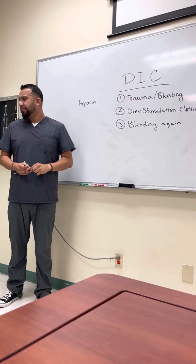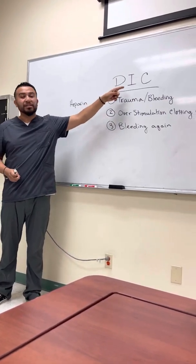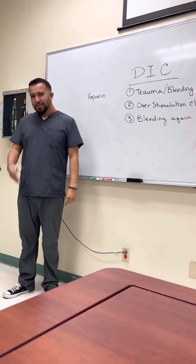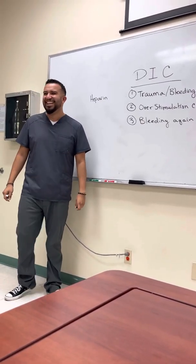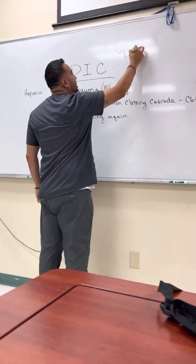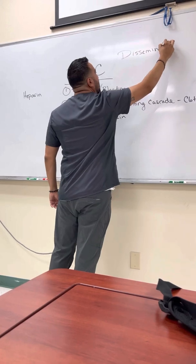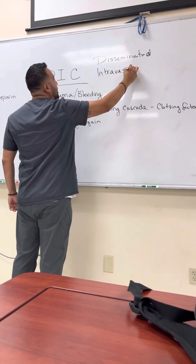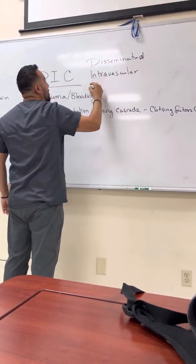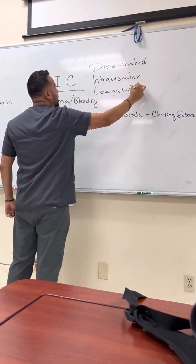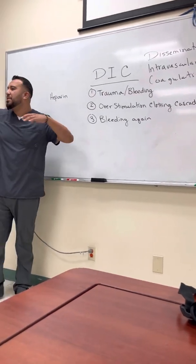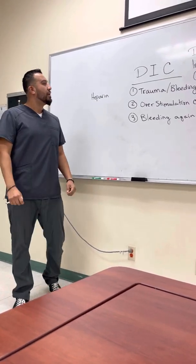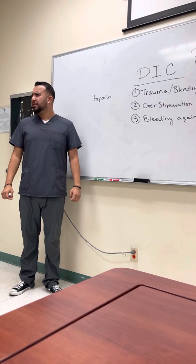The full name of DIC is disseminated intravascular coagulation. Disseminated means it's spread out — it spreads everywhere, all over the body. It's not one specific location.